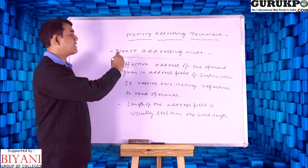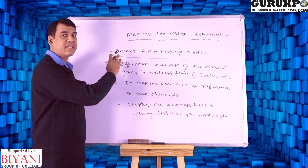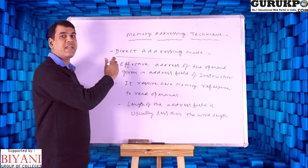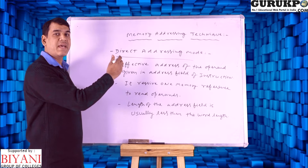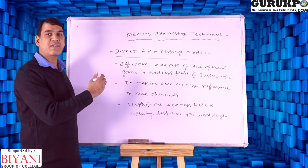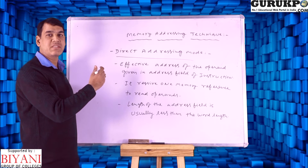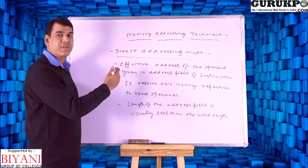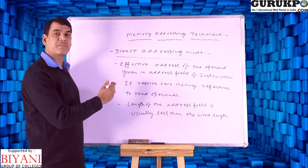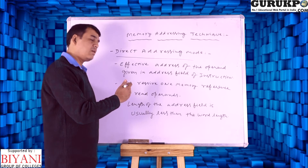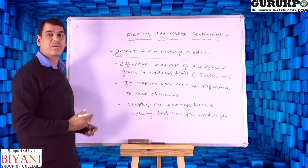The first addressing mode is called direct addressing mode. The features of direct addressing mode are: first, the effective address of the operand is given in the address field of the instruction. Second, one memory reference is required to read the operand. Third, the length of the address field must usually be less than the word length.